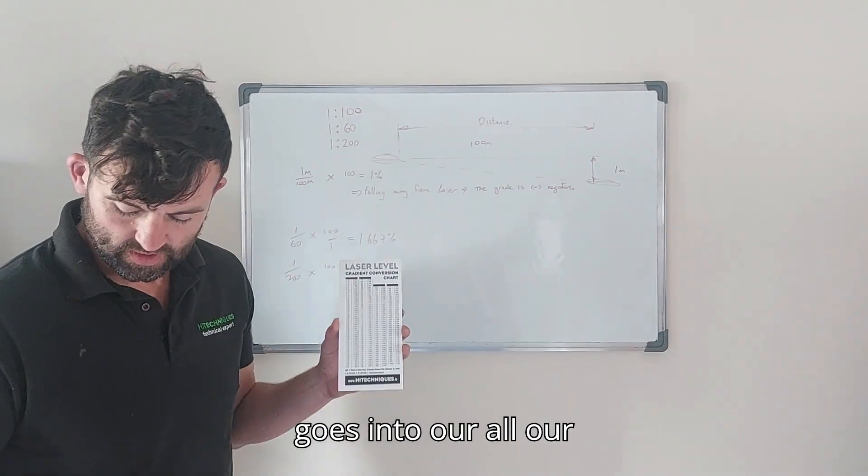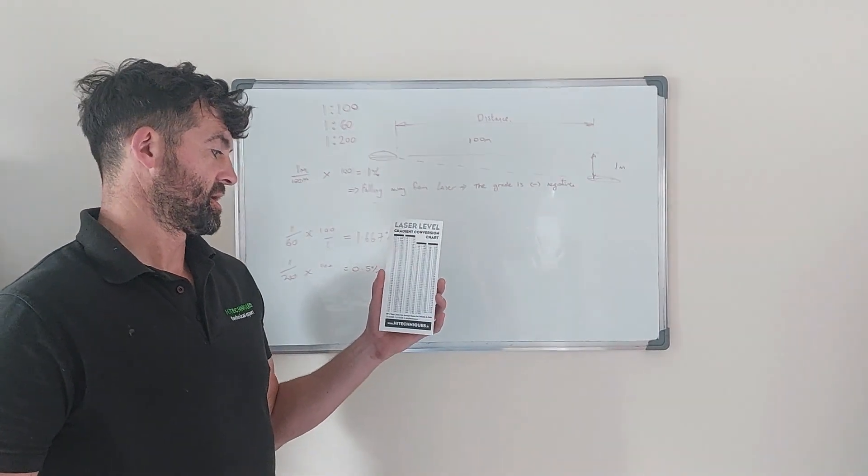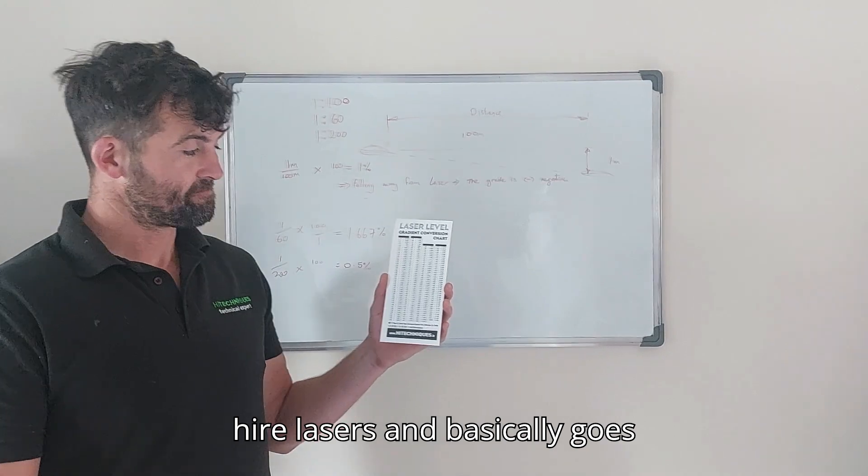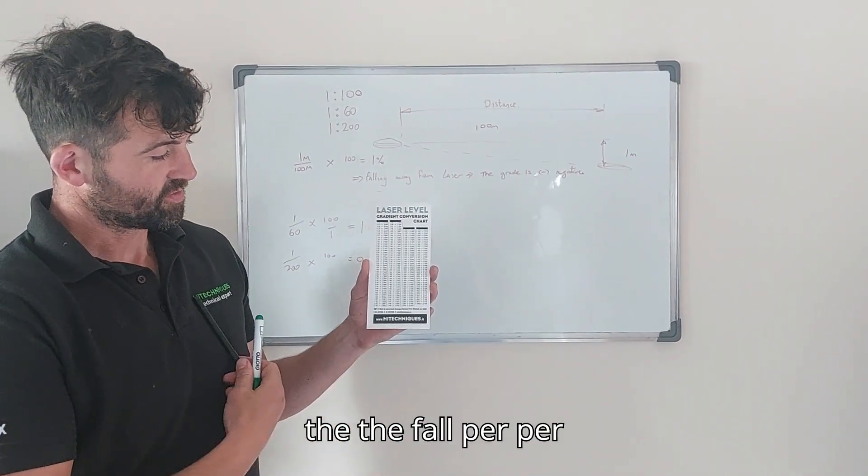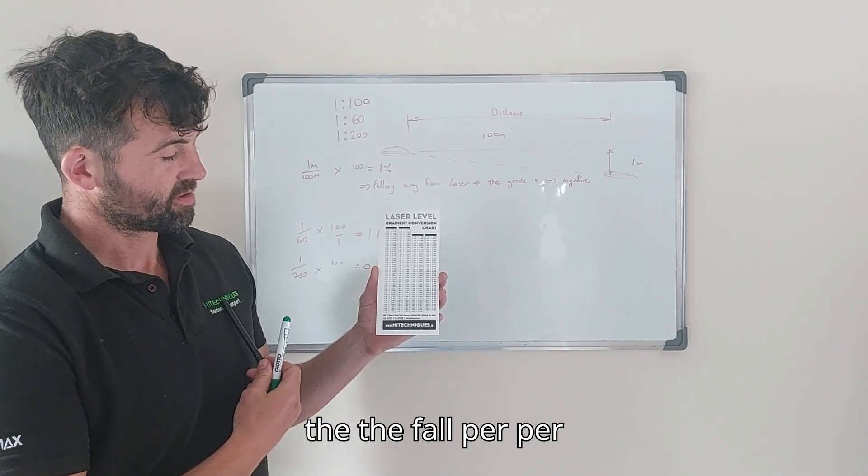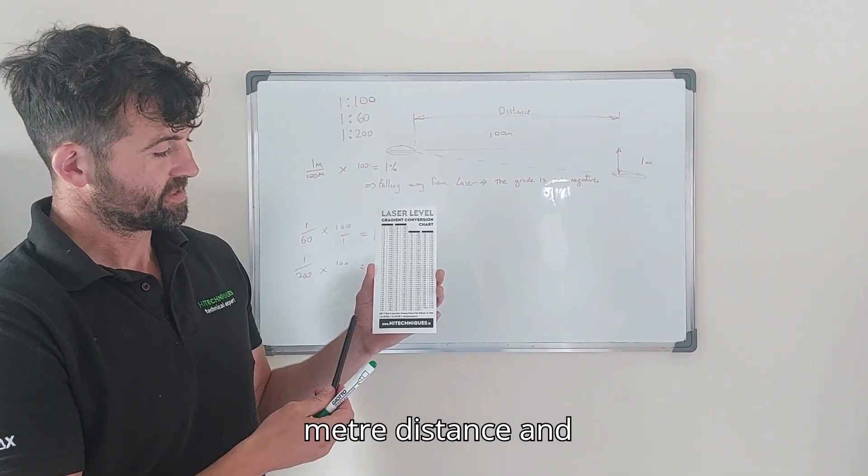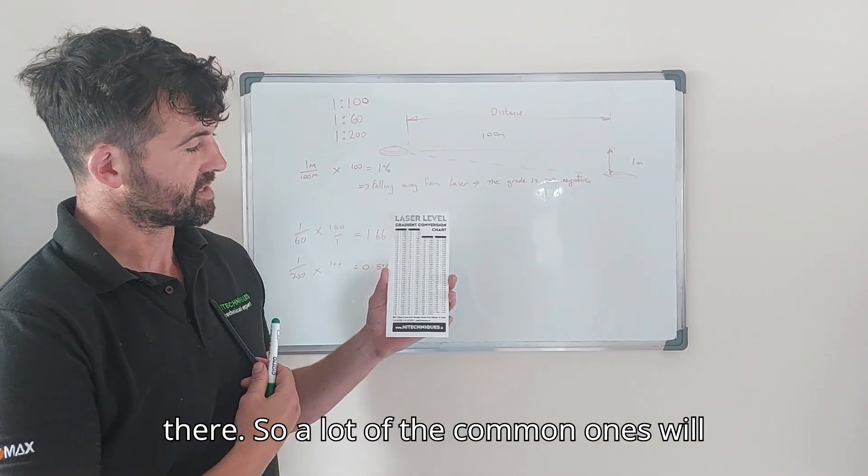We have a little chart that goes into all our laser levels and basically goes through the ratio or the fall per meter distance and then the percentages on the right hand side there.